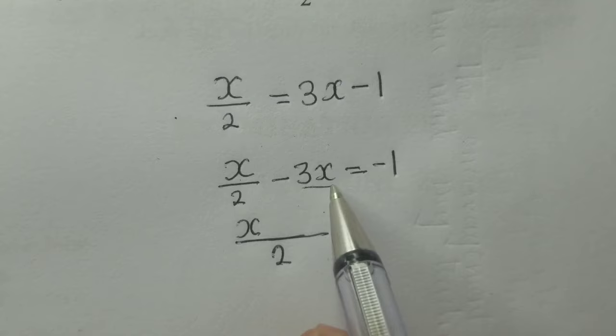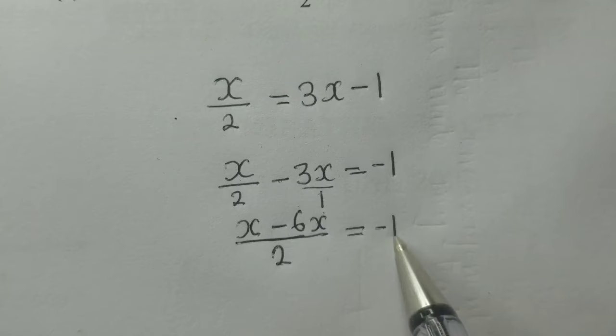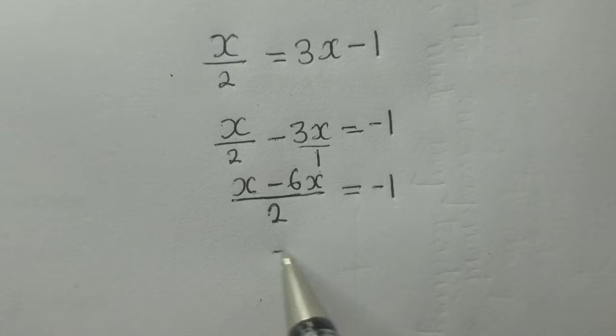1 into 2 is 2, and 2 times -3x would be -6x, which equals -1. From this stage, we can clean up: we have -5x/2 = -1.